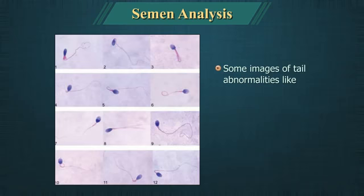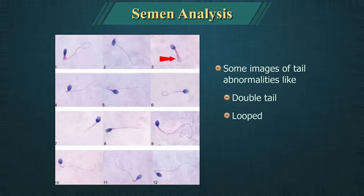Images of tail abnormalities such as double tail, looped, coiled and bent can also be seen.